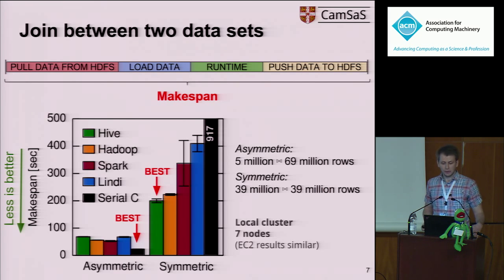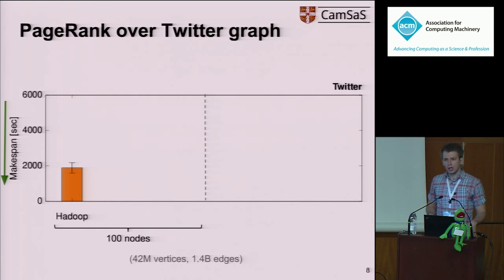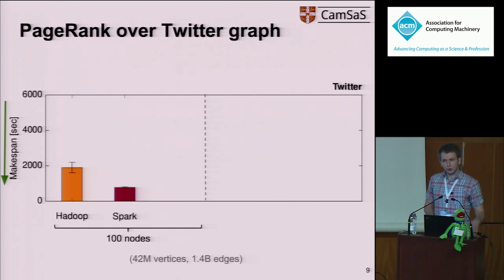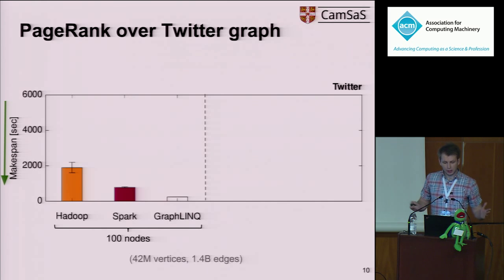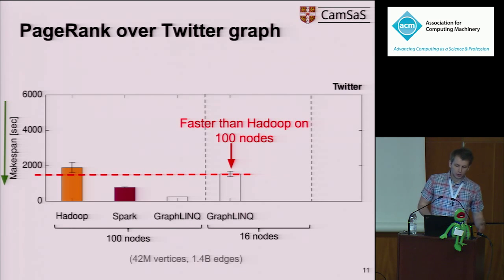Kermit wanted to see if among graph processing systems there is a clear winner. So he executed a PageRank computation on the Twitter graph, which has 42 million vertices and 1.4 billion edges. He first executed it using Hadoop on 100 nodes, and obviously it doesn't work that well. He also tried Spark and then GraphLink on top of Naiad, which turns out to outperform the other systems. At a smaller scale of 16 nodes, GraphLink is still faster than Hadoop running on 100 nodes.